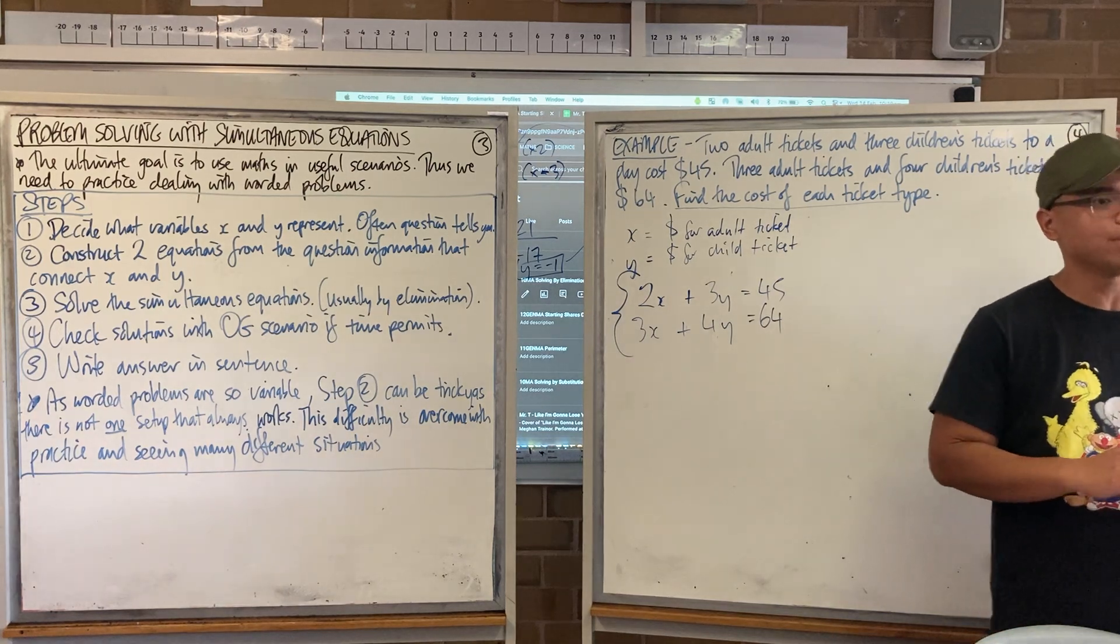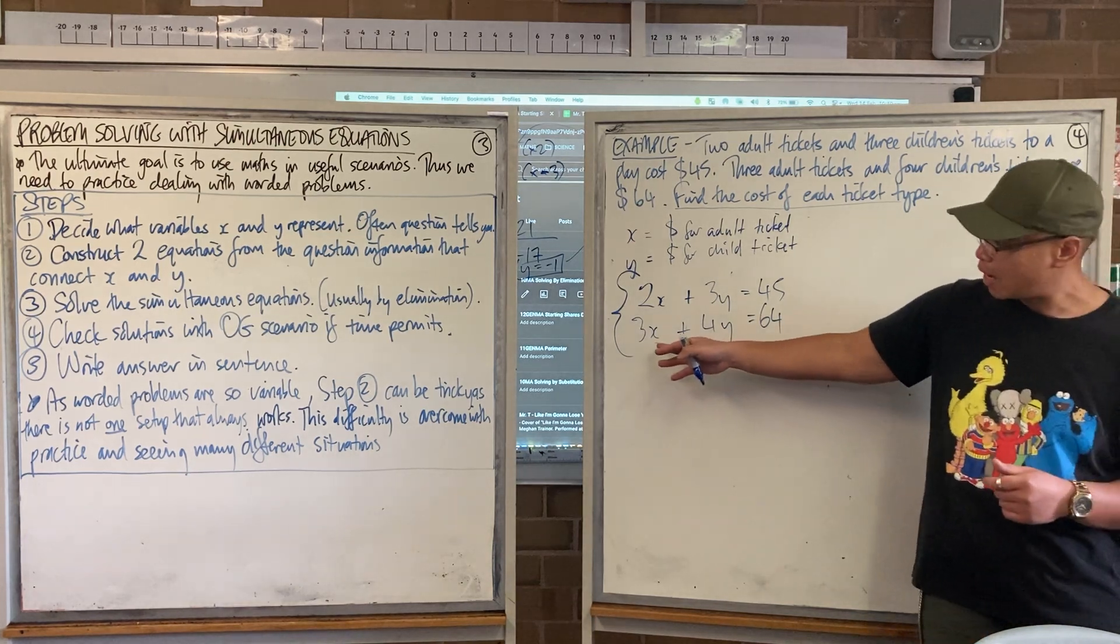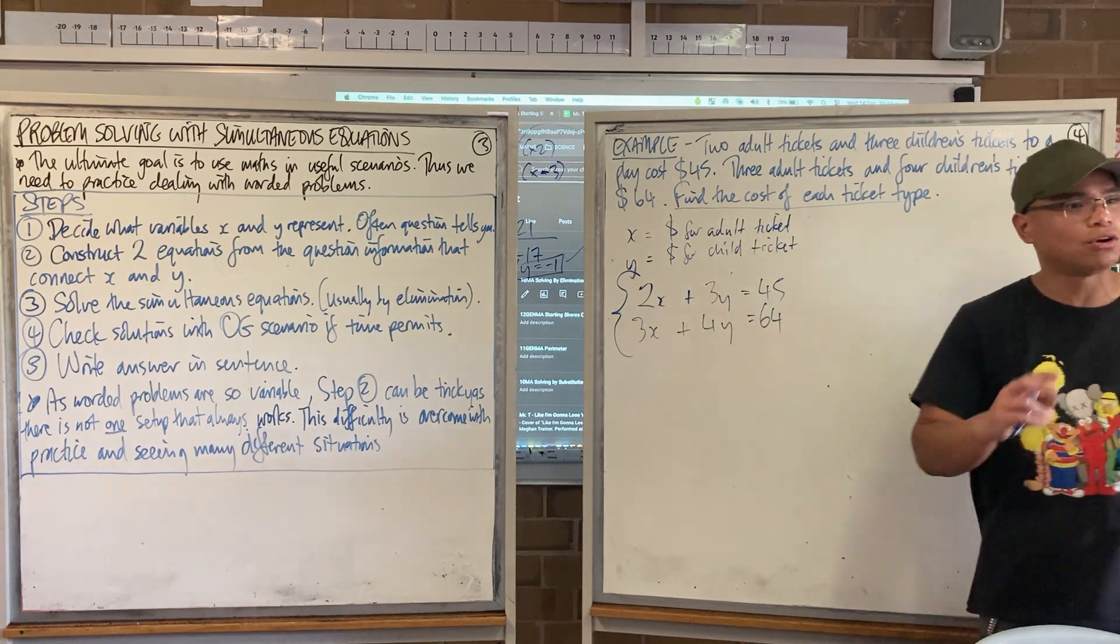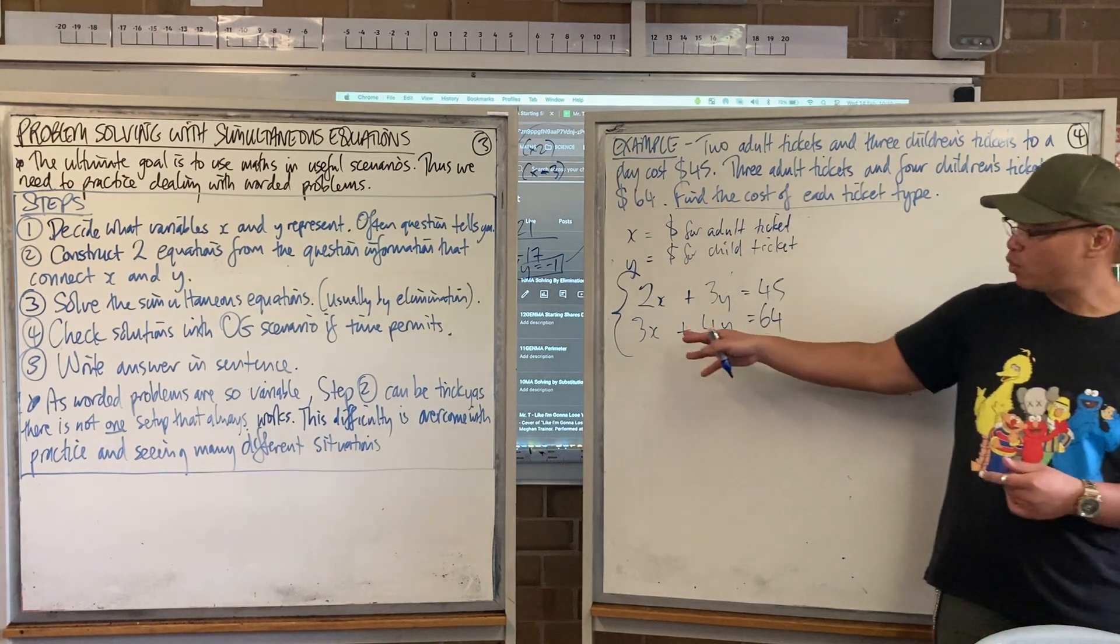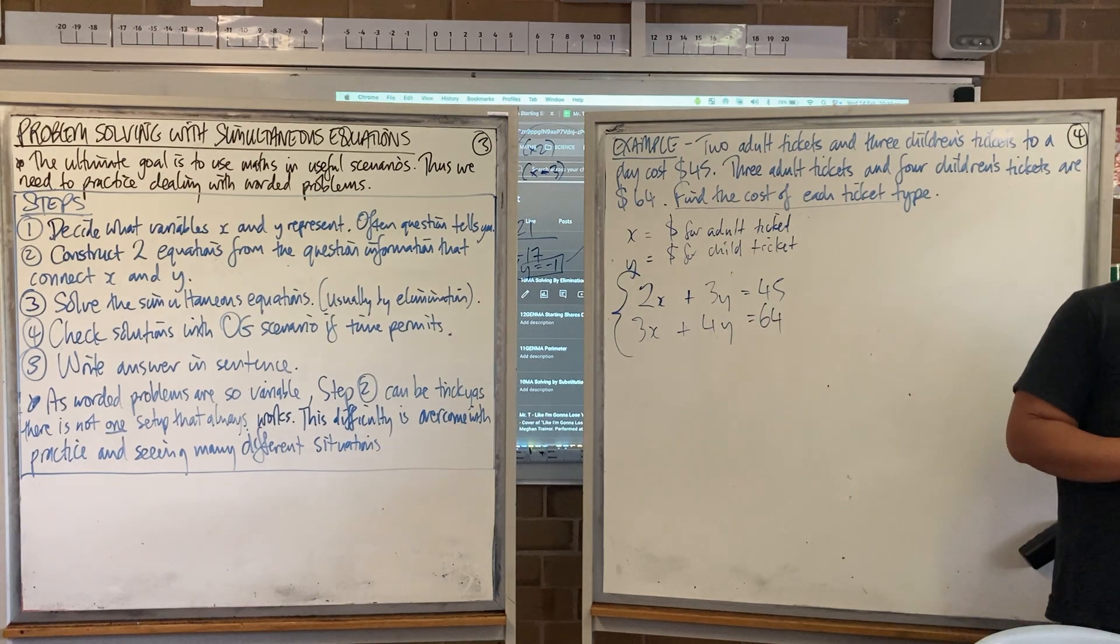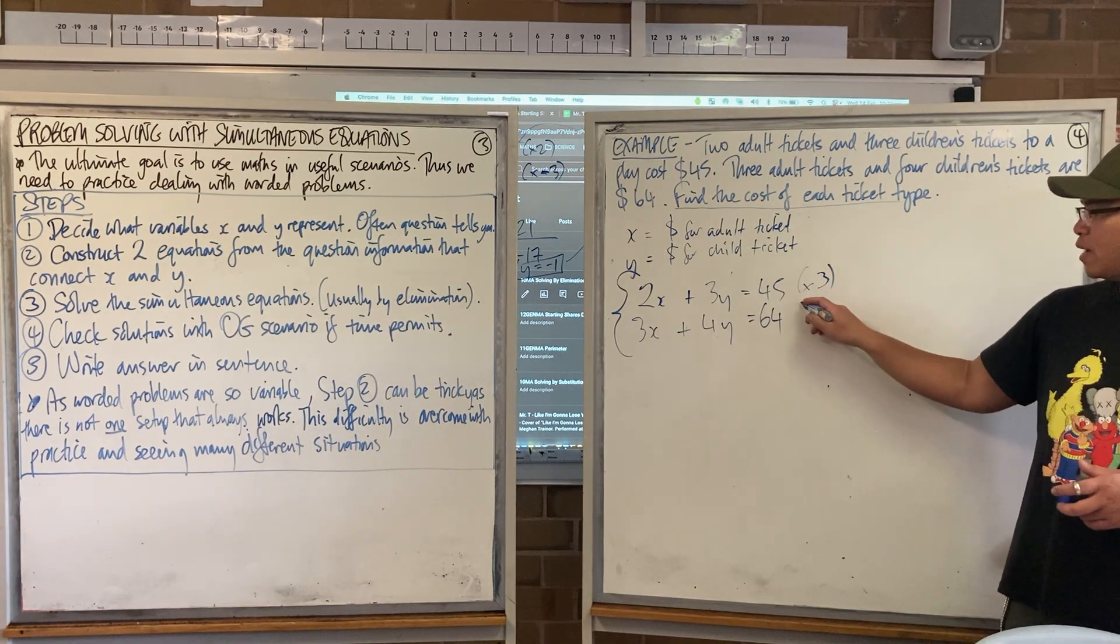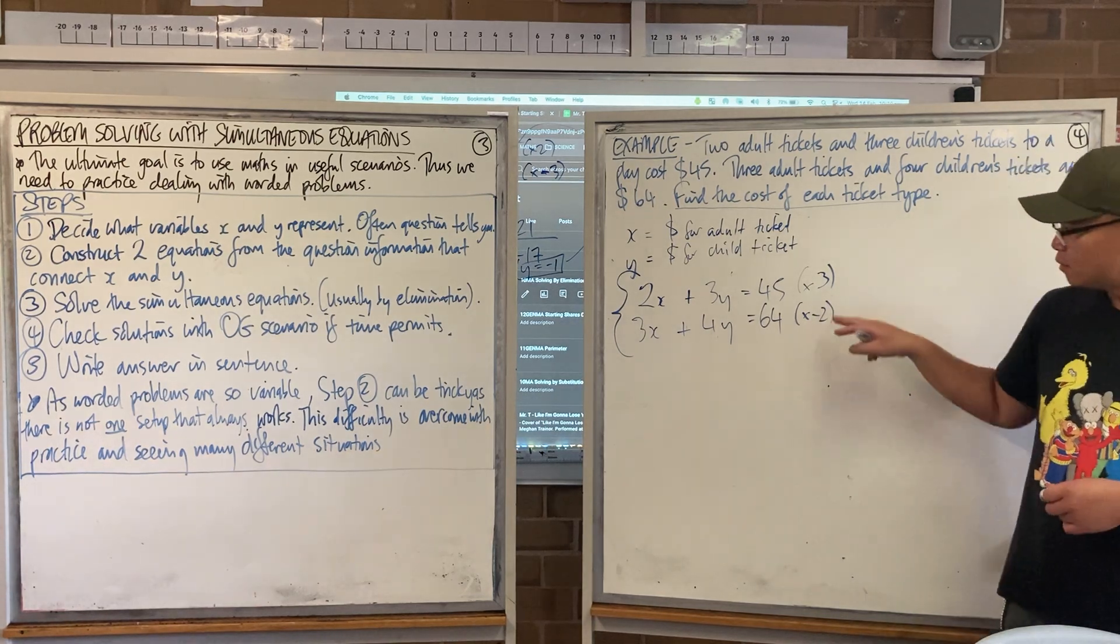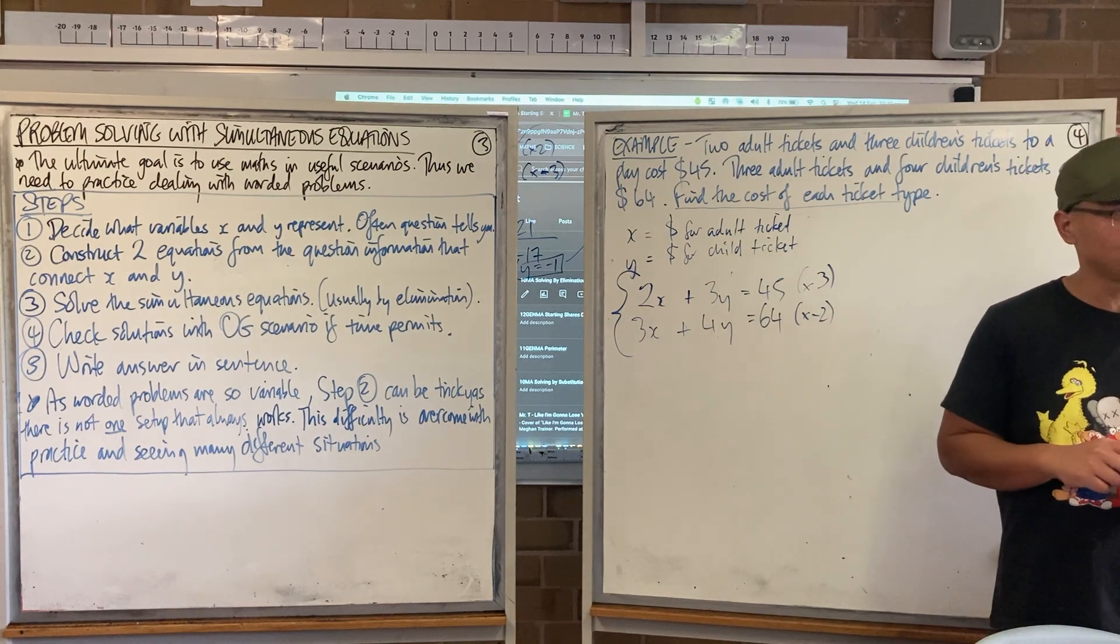Let's apply the elimination because these are both in general form. Are any of the coefficients already matching? No. So I need to multiply both somehow. Which coefficients are going to get me the smallest numbers? Two and three or three and four? Two and three. Okay. The top I'm going to multiply by? Three. Good. The bottom I could multiply by? Negative two. Please be aware, I could have multiplied the top by negative three and the bottom by two. It really doesn't matter because you're still going to eliminate.